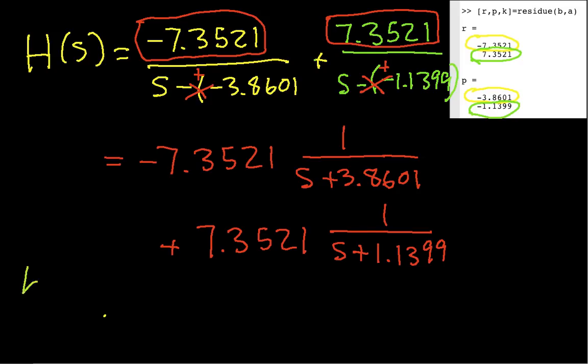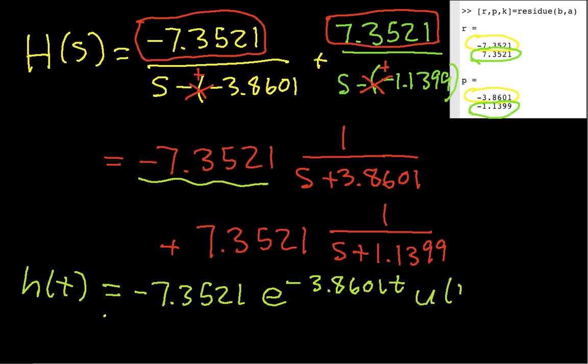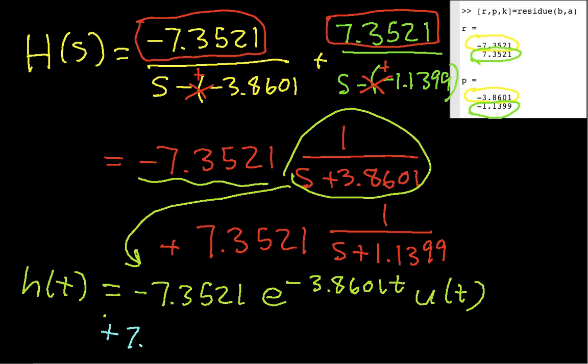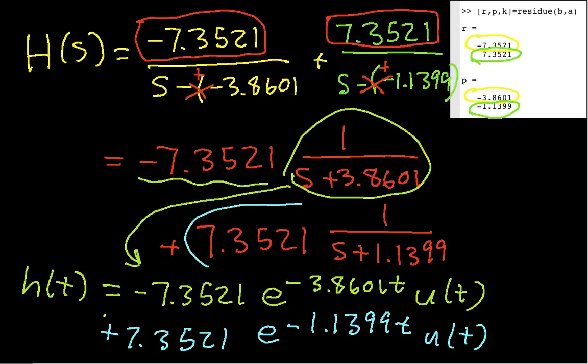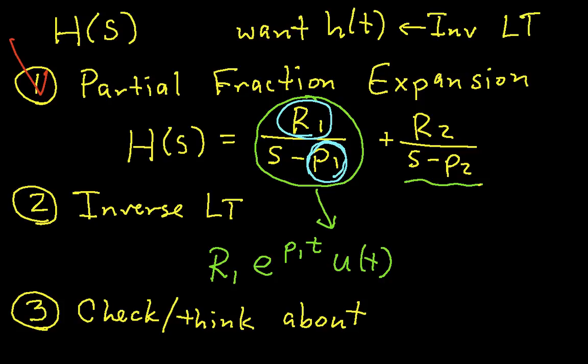So the next thing we need to do is take the inverse Laplace transform of each of these terms. So I'm just going to have this constant e to the minus 3.8601 t U(t). So that's basically this term right here. And that's the inverse Laplace transform of the second term. OK, so there you have it. We've got H(t). So we can actually go to our list of things to do and check off that we've completed step 2. We've made the inverse Laplace transform properly.